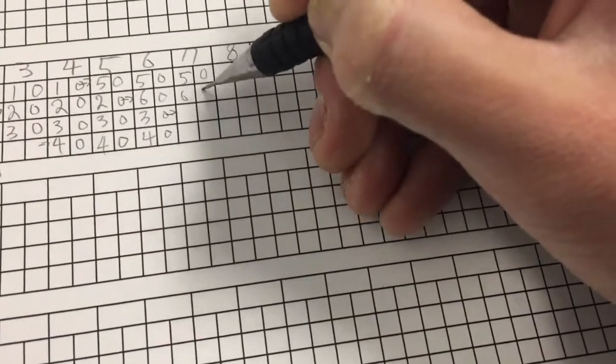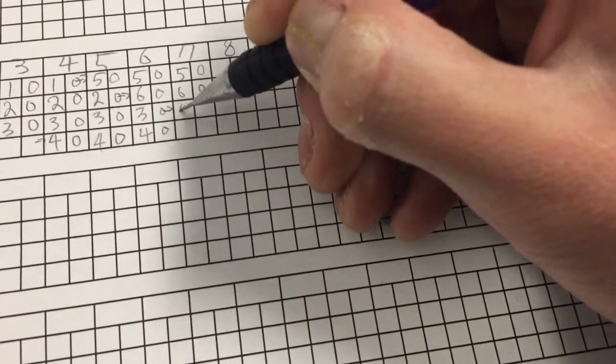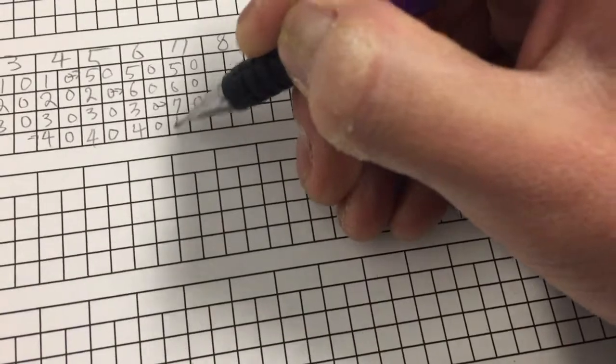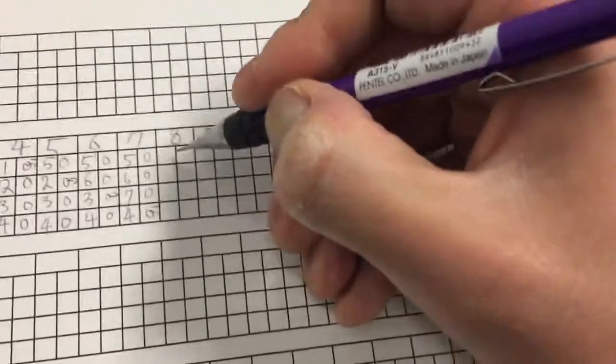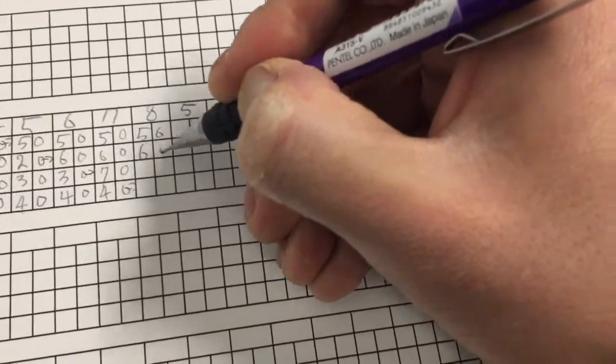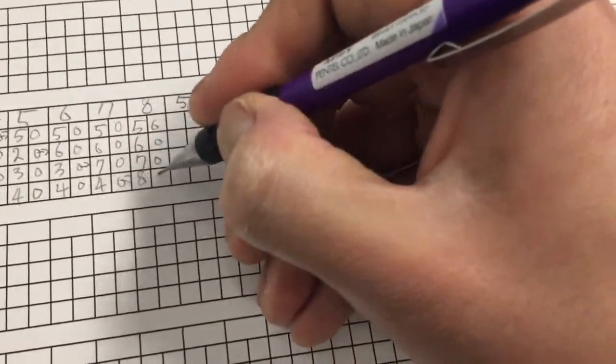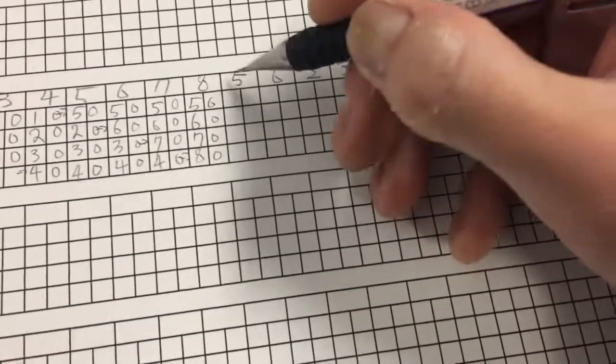And then the next pointer is here. 5, 0, 6, 0, 7, 0, and then 4, 0. And the next pointer is here. 5, 0, 6, 0, 7, 0, 8, 0. So we have like all this.